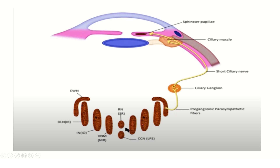These four nuclei — ventromedial, intermediate, dorsolateral, and Edinger-Westphal — are present on both sides. In the midline, there is the median raphe nucleus and the caudal central nucleus.